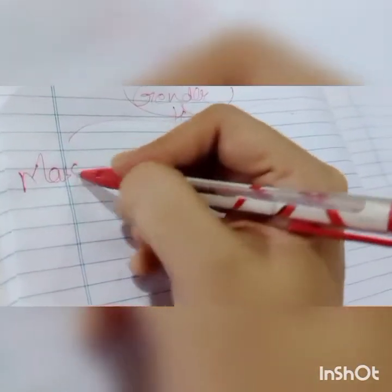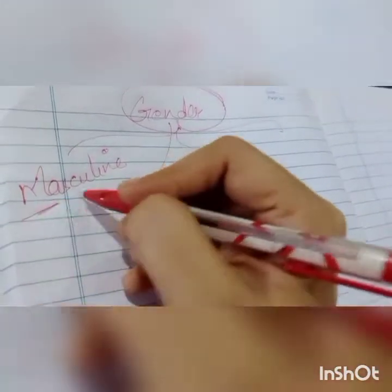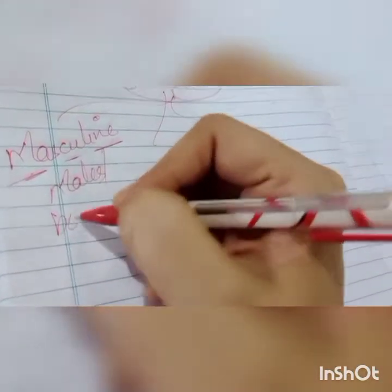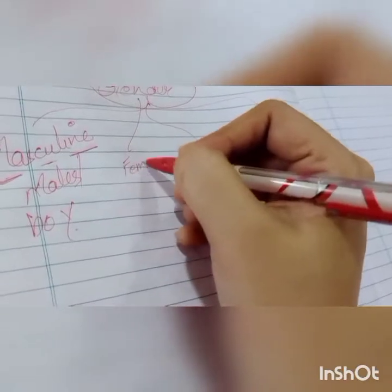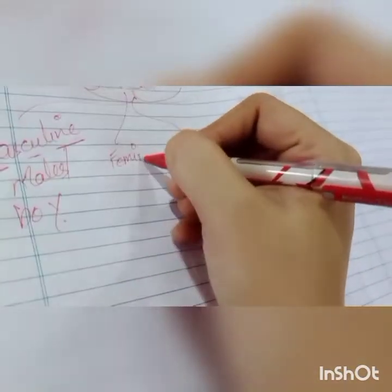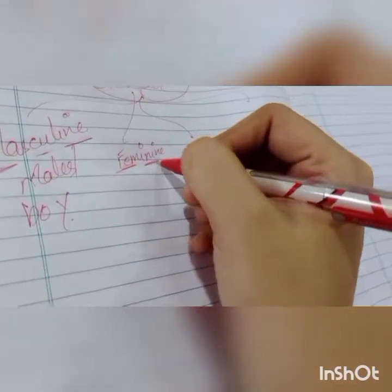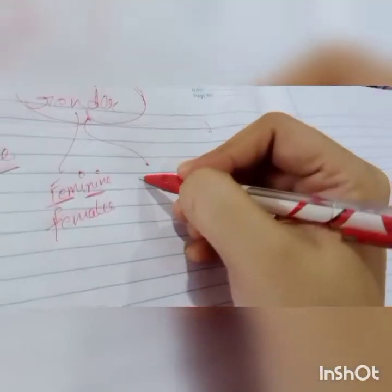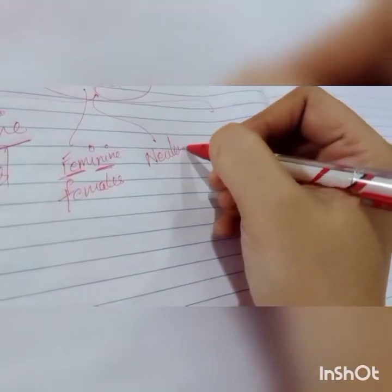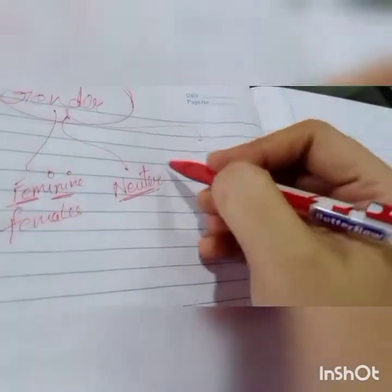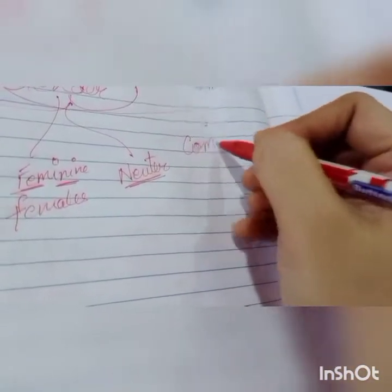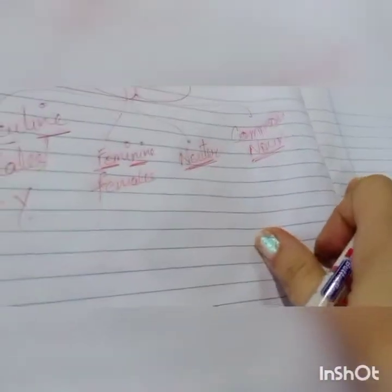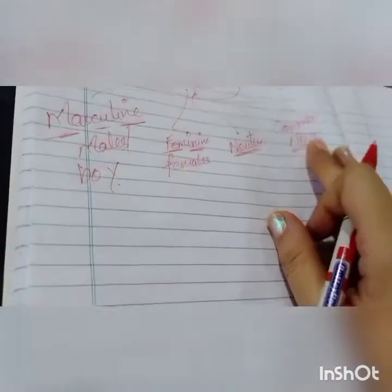One is masculine — used for males or boys. Then feminine — used for females, girls, or ladies. Then we have neuter, N-E-U-T-E-R. And the next is common gender. So four types: masculine gender, feminine gender, neuter gender, and common gender.